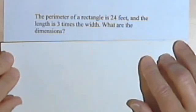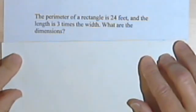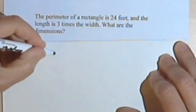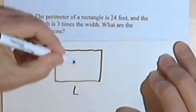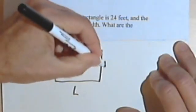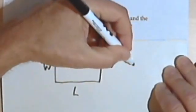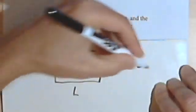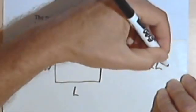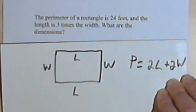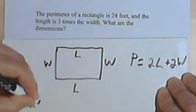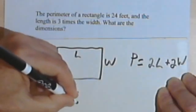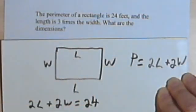The perimeter of a rectangle is 24 feet. The length is three times the width. Let's remember about rectangles. A rectangle has four sides, and it's got a length and a length, a width and a width. So the perimeter, P, equals 2L plus 2W. And it says the perimeter of a rectangle is 24 feet. So I know that 2L plus 2W equals 24.